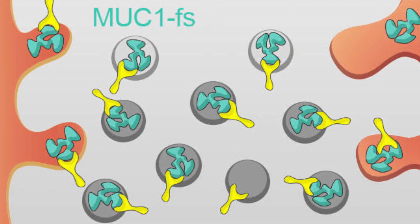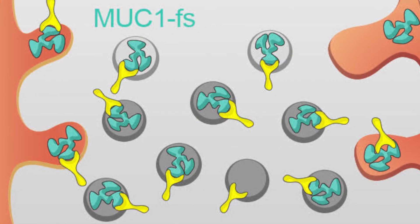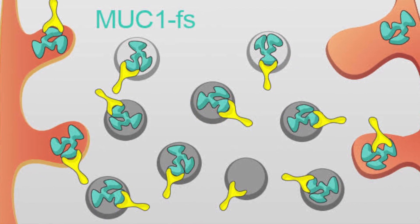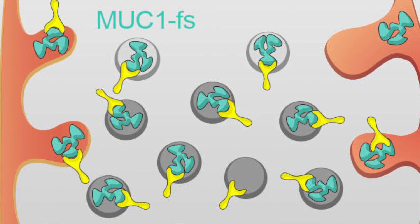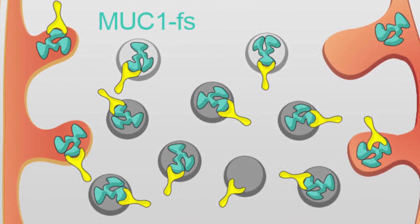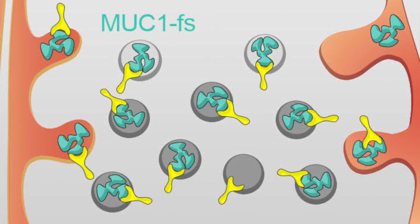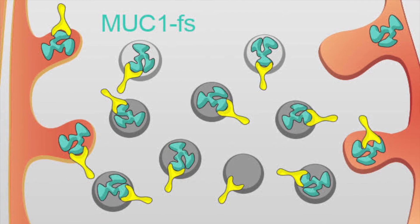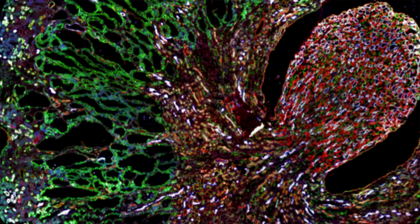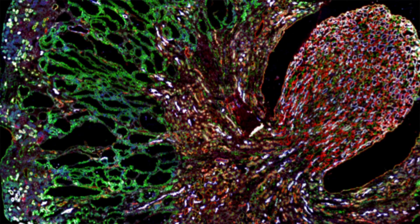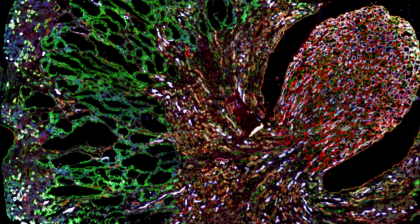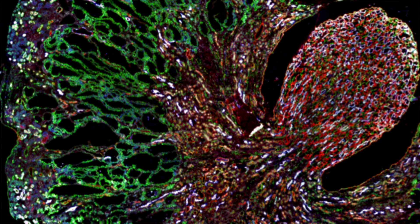The apparent protein accumulation of the mutant frameshift MUC1 causes stress to the cells. This induction of ER stress and the unfolded protein response is eventually what leads to the death of these tubular epithelial cells, which is what eventually leads to the kidney failure in our MUC1 kidney disease patients.